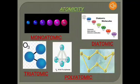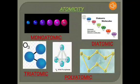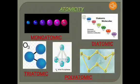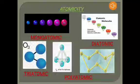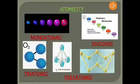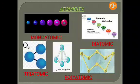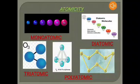Other examples of monoatomic molecules include radon, potassium, sodium, calcium, iron, and copper. A diatomic molecule is a molecule of an element composed of two atoms. Examples of diatomic molecules are elementary gaseous elements such as hydrogen, oxygen, chlorine, and nitrogen. A triatomic molecule is a molecule of an element composed of three atoms.